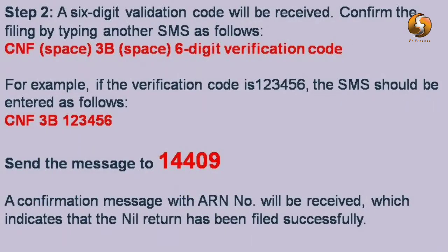Now we will go to the second step to confirm the GSTR-3B nil return filing. You will receive a six-digit validation code on your registered mobile number. Confirm your GSTR-3B filing by typing another SMS in the format: CNF space 3B space and then that six-digit code, for example 123456. Send this message to the same number, 14409.